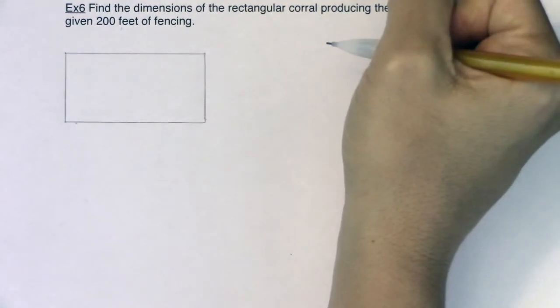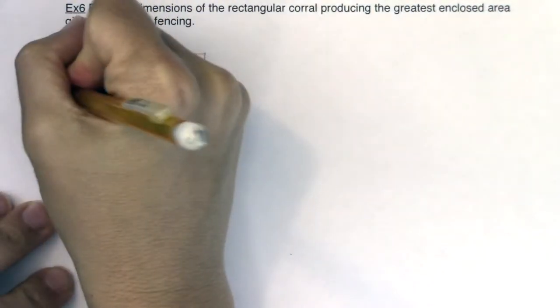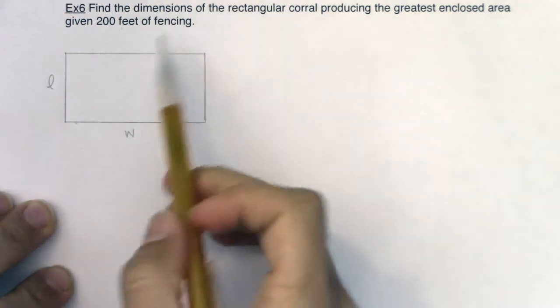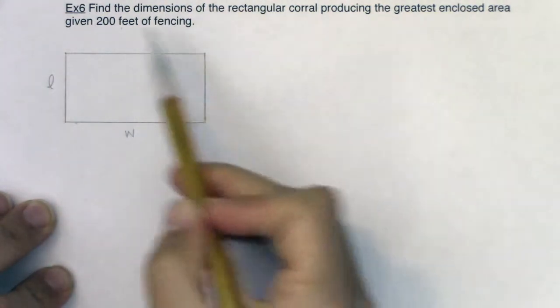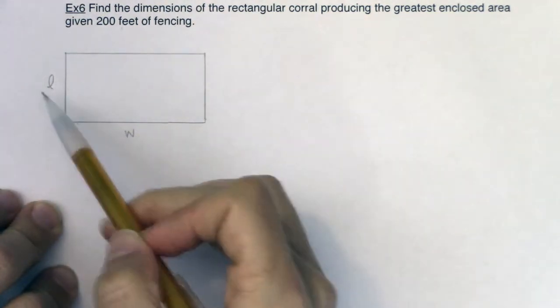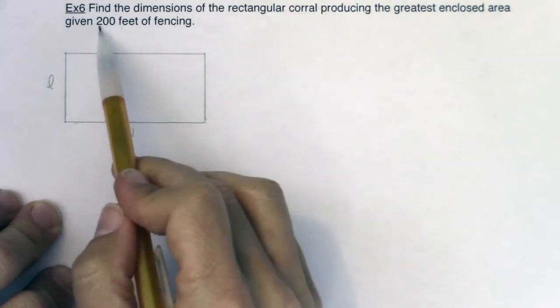And I will label this with an L and this with a W. So I don't know my length and width. I was not given information about that. So those definitely seem to be two variables.